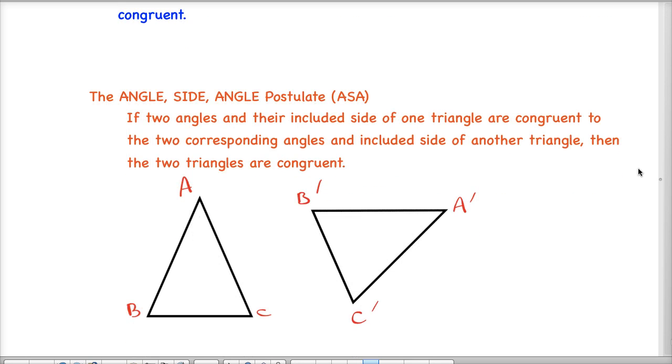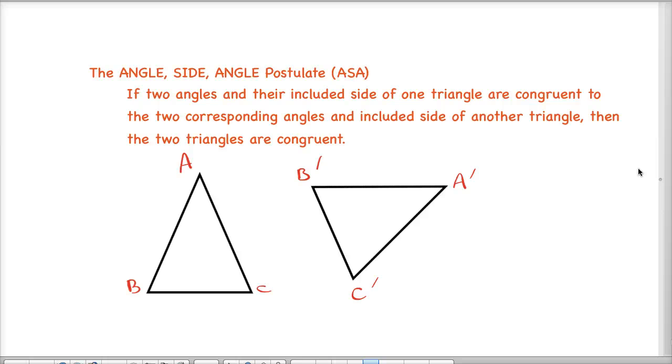and these ones are called the angle-side-angle and angle-angle-side postulates. So first let's look at angle-side-angle. The abbreviation is ASA and it says if two angles and their included side of one triangle are congruent to the two corresponding angles and included side of another triangle, then the two triangles are congruent.